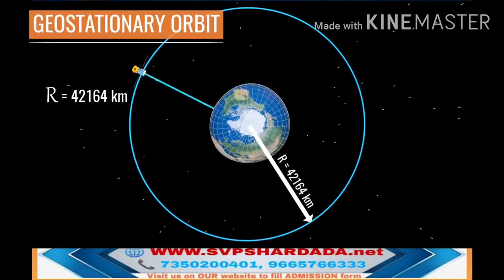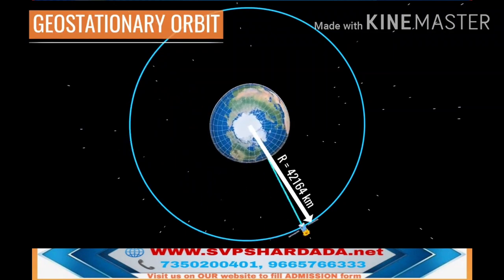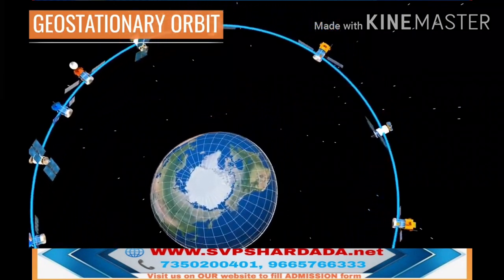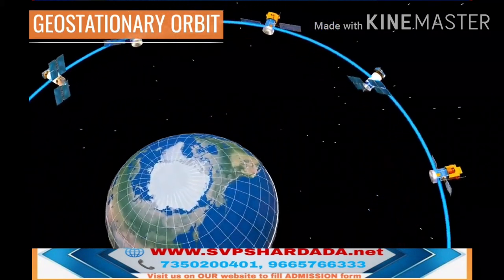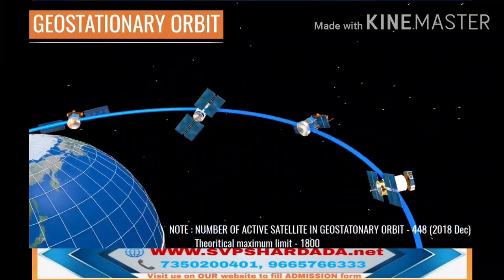All satellites used for satellite TV purposes should be parked in this orbit, and this visual shows how crowded the geostationary belt has become nowadays.